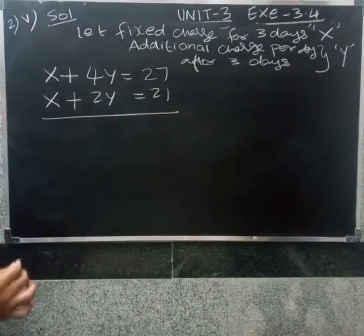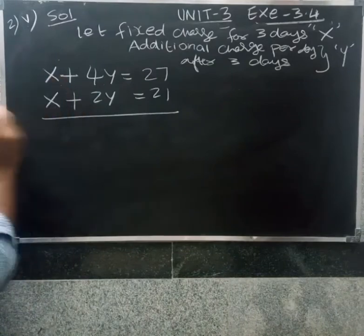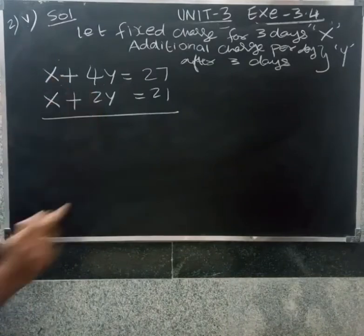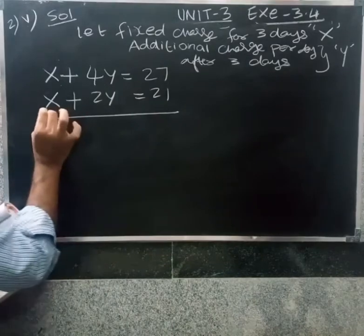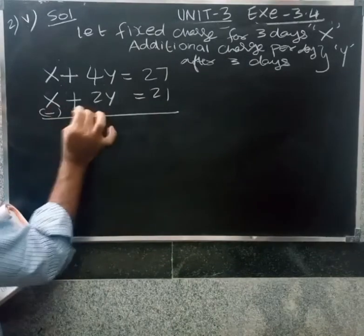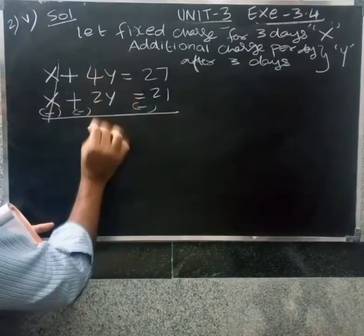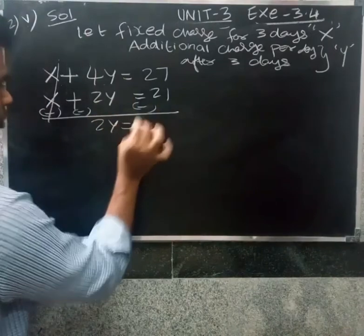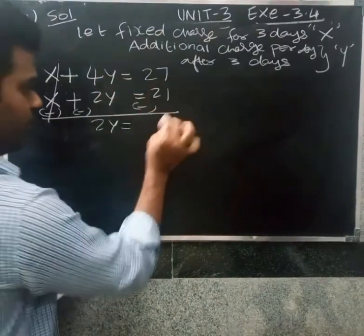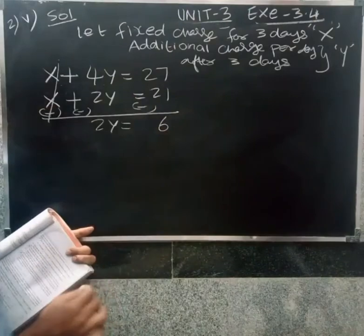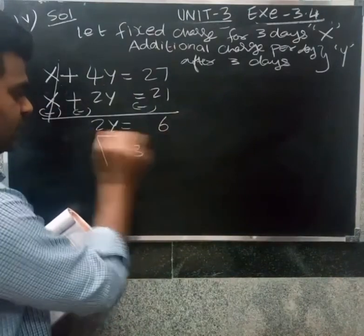For 7 days: 3 fixed days plus 4 extra days equals 27. For 5 days: 3 fixed days plus 2 extra days equals 21. Using the elimination method: subtracting the second equation from the first gives 4y minus 2y equals 27 minus 21, so 2y equals 6, and y equals 3.